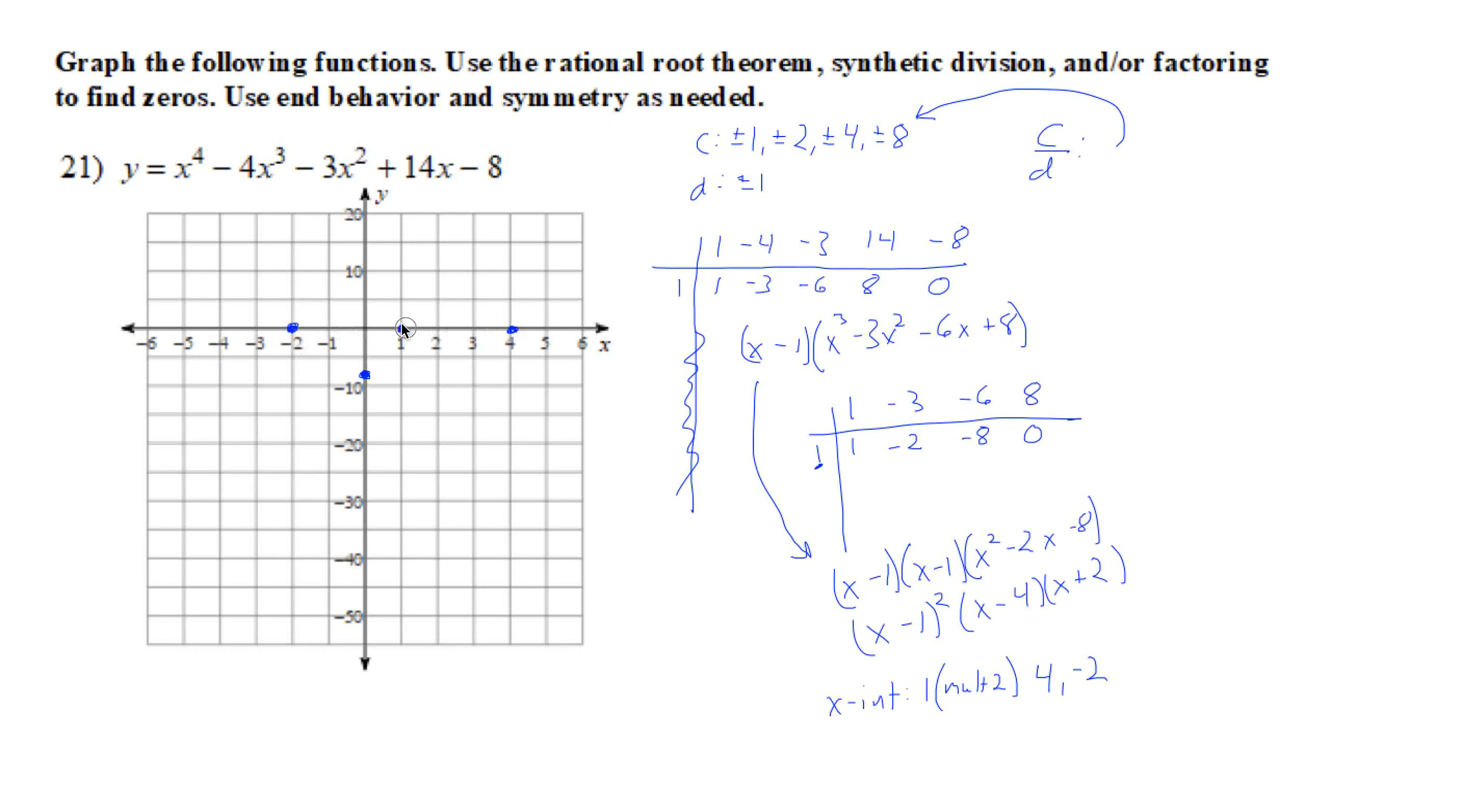Now this one right here is multiplicity 2, and we learned with multiplicity of even, it's going to kind of bounce off that point. So let's now look at end behavior. End behavior: this is even and positive, so that means they're both going to be up and up. So looks like it's going to start here.